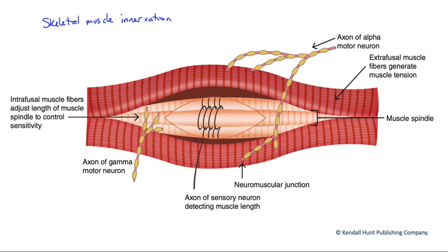They fall into two main categories. First, we have the large contractile muscle cells known as the extrafusal muscle fibers. These are the muscle fibers that are controlled via alpha motor neurons, shown here, to generate the contractile strength of a muscle. The alpha motor neurons branch and innervate individual muscle fibers within what is called a motor unit, and there are multiple motor units within a given muscle.